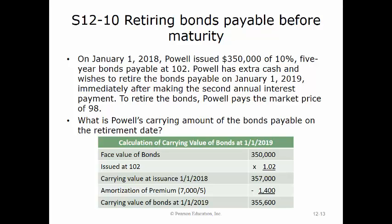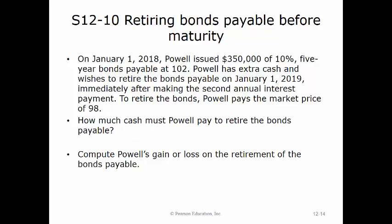The annual premium amortization equals the $7,000 premium divided by five years, or $1,400. Subtracting $1,400 from the carrying amount of $357,000 gives us $355,600 as the carrying value on January 1st, 2019. To retire the bonds, Powell pays $350,000 times 98%, or $343,000. The gain on retirement equals the carrying amount of $355,600 minus the retirement price of $343,000, giving a gain of $12,600.